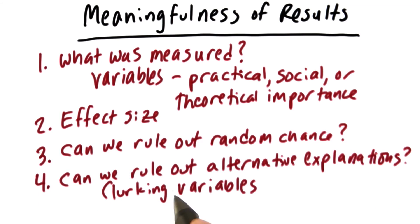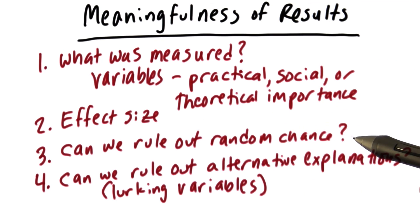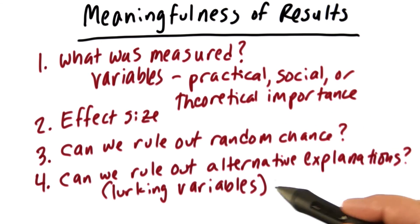Next, we need to know, can we rule out alternative explanations for the results? These are those dreaded lurking variables we've been talking about before. So putting this all together, this gives you a rough guideline of assessing whether the results of a study are meaningful. What was measured? How large was the effect? Could we rule out random chance as an explanation? And can we rule out lurking variables as explanations for the results?